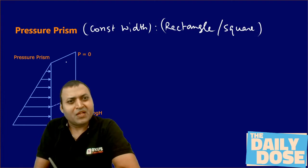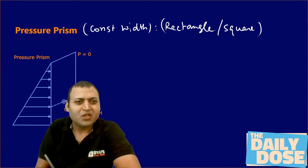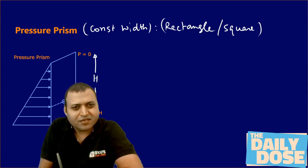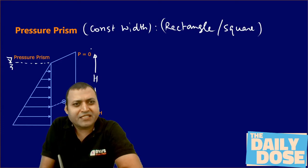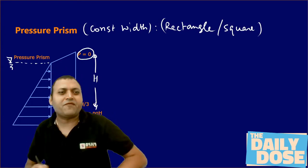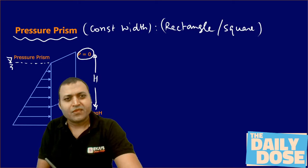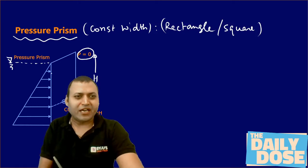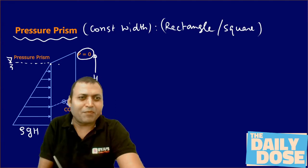Consider a rectangular plate kept in static fluid. The width of the plate is b, which is constant, and the height of the plate is h. The free surface is at the top where pressure equals zero. The pressure linearly increases with depth in case of static incompressible fluid according to hydrostatic law. So the pressure at the bottom will be equal to rho-fluid into g into h, meaning the pressure prism will be a triangle.